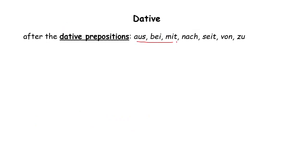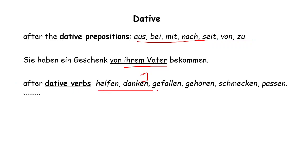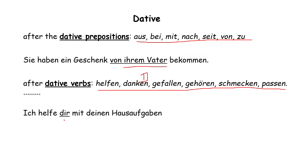After dative prepositions, we always use dative. These are the prepositions called dative prepositions, like: seit, haben, angeschenkt, von, einem, vater, and bekommen. So 'von' is a dative preposition — that's why we use dative after it. After dative verbs — these verbs are called dative verbs — if we need to use any object, normally a person, then we use dative. For example: 'Ich helfe dir' — 'dir' is dative because 'helfen' is a dative verb. Also, 'mit' is a dative preposition, so we use dative after it too.